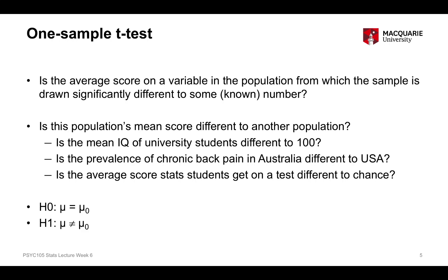The alternate hypothesis, H1, is expressed as mu not equal to mu-zero — that is, the average score in the population from which our sample was drawn is not equal to some known external population average score. This may seem conceptual at this stage, but it will make more sense when we look at an example on the next slides.